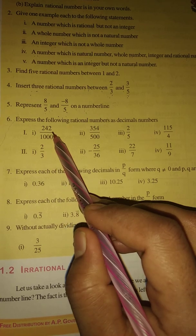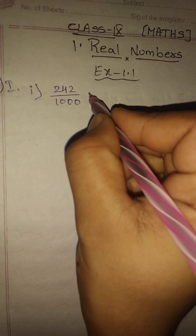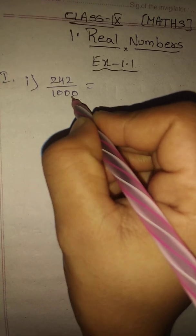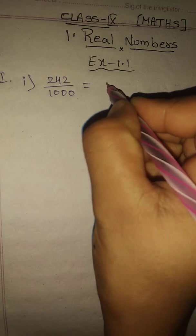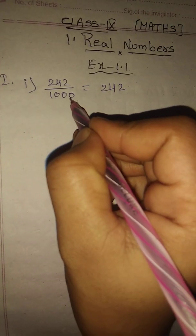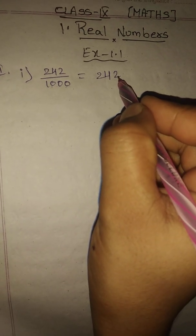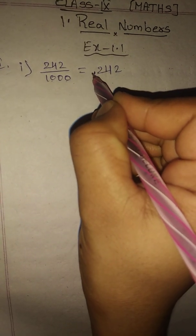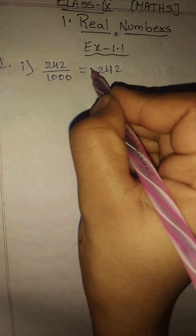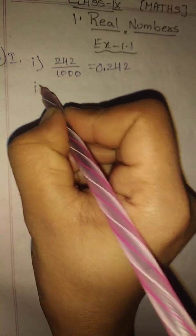First Roman: 242 divided by 1000. In the denominator there are three zeros, so write the numerator as it is and count three digits from the right side — one, two, three — and keep the decimal point there. Before any digit there is none, so write zero. The answer is 0.242.